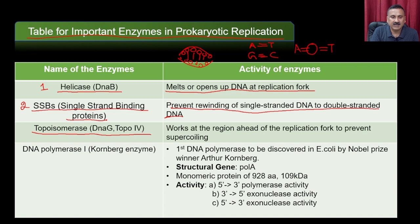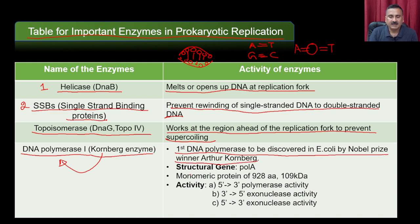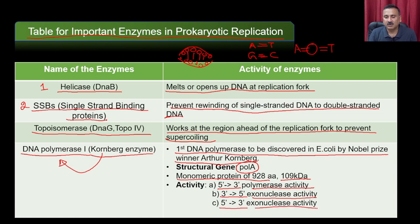Topoisomerase (DNA G) works at the region ahead of the replication fork to prevent supercoiling. DNA Polymerase I (Pol1), also called the Kornberg enzyme, was the first DNA polymerase discovered in E. coli by Nobel Prize winner Arthur Kornberg. The gene encoding DNA Pol1 is called polA; it is a monomeric protein of 928 amino acids (109 kDa). It has three activities: 5' to 3' polymerase activity, 3' to 5' exonuclease activity, and 5' to 3' exonuclease activity.